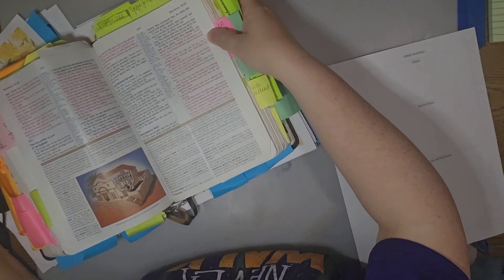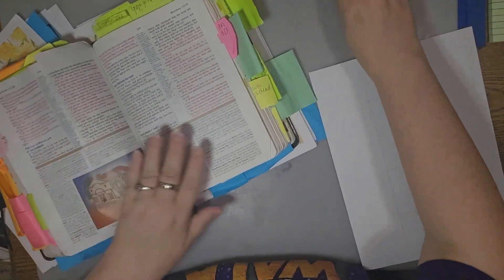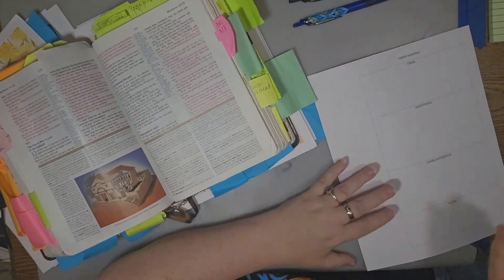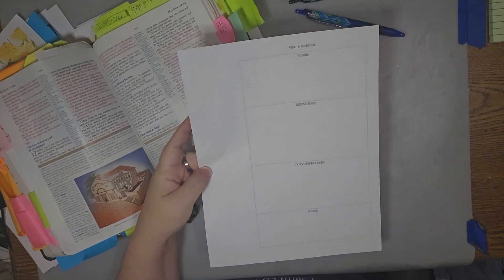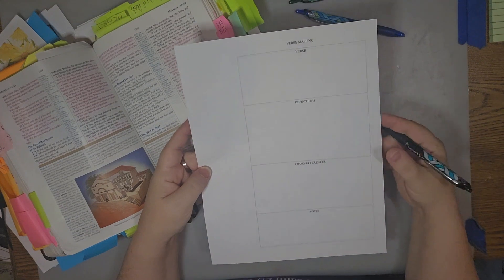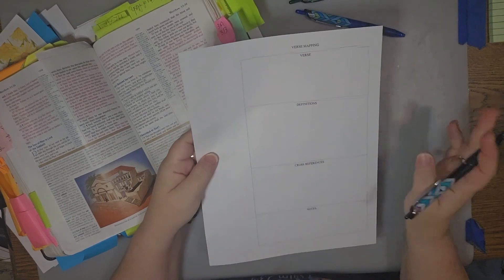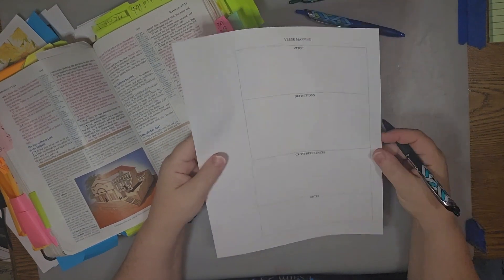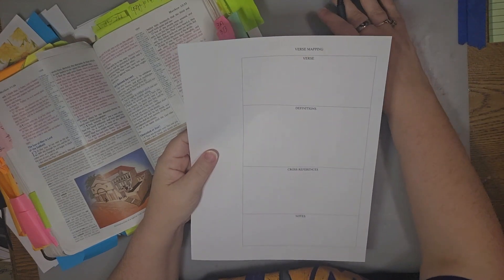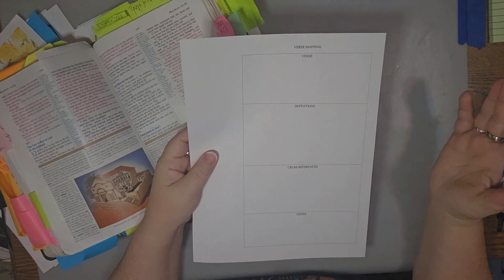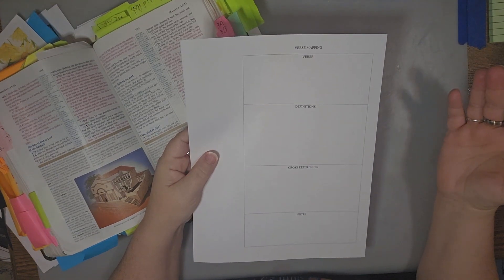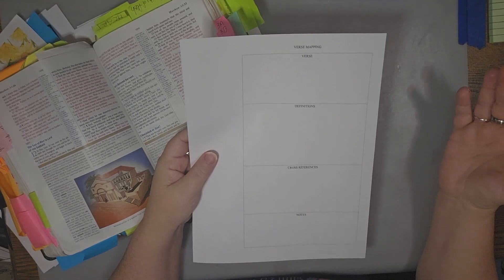So let's get into this scripture. 11:28 was the one that was given. Now, this is a different verse mapping sheet. I'm going to go ahead, because I'm out of the other one and I forgot to print one off. So let's just use this one.